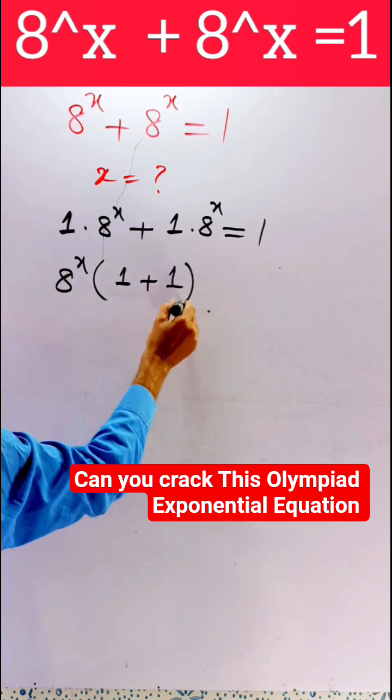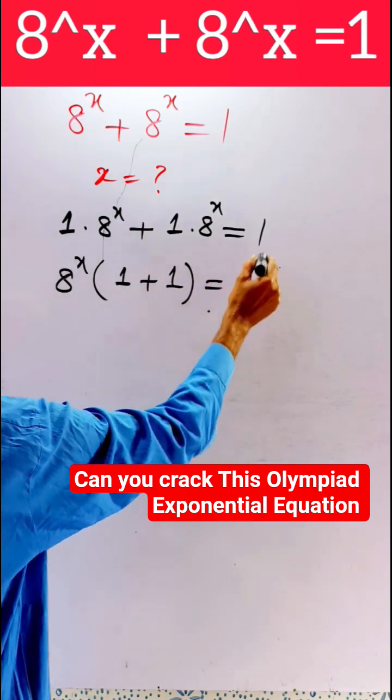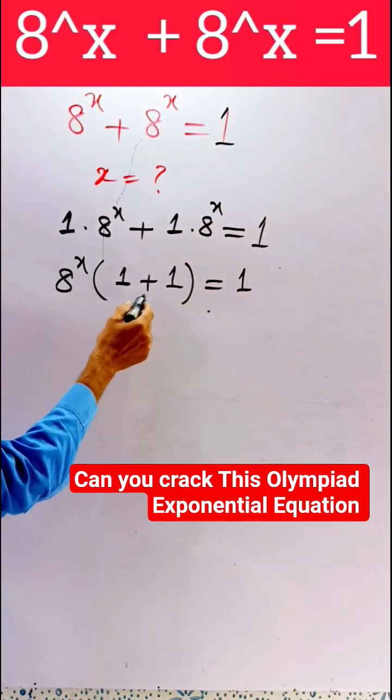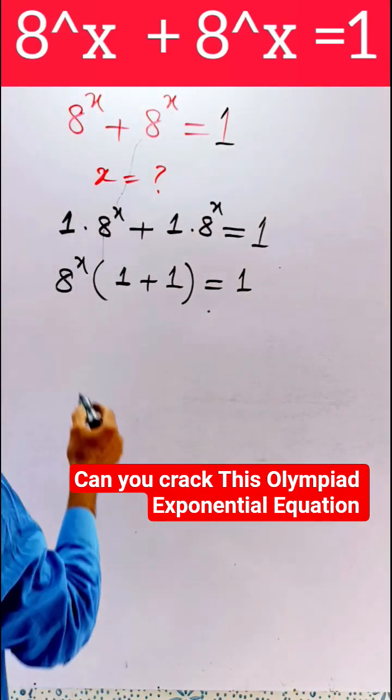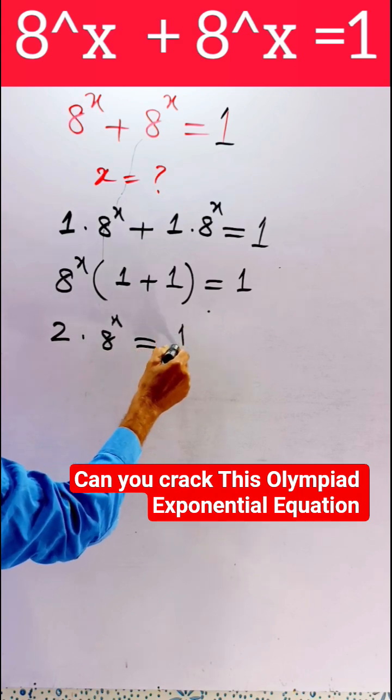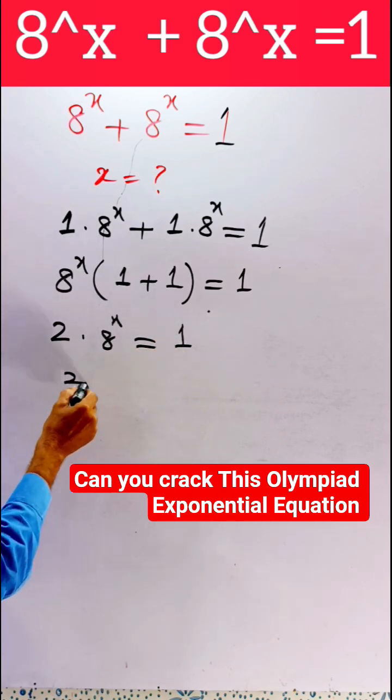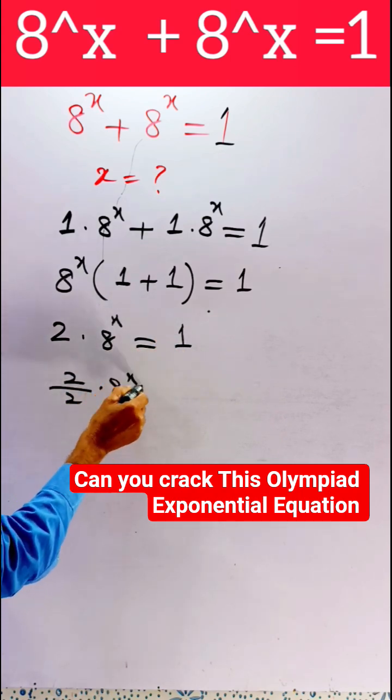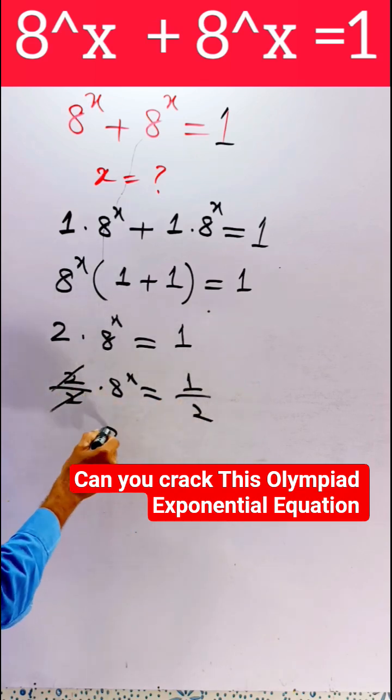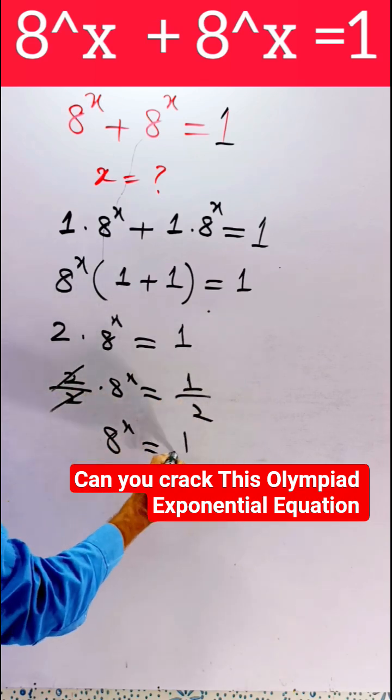Now we are adding their coefficients. We get 2·8^x = 1. Now dividing both sides by 2, we get 8^x = 1/2.